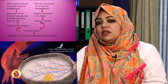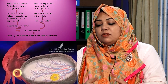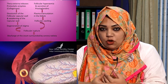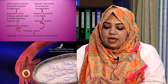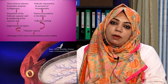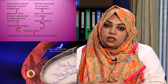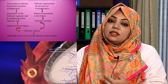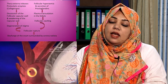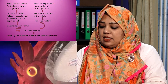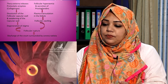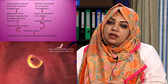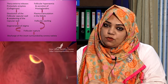When the follicle is ruptured, it releases a secondary oocyte — our ovum — which is surrounded by the corona radiata and discharged into the abdominal cavity. This is the postulated mechanism of ovulation.